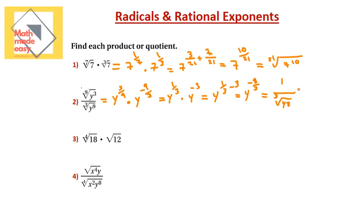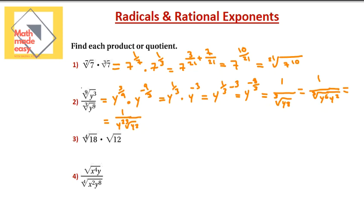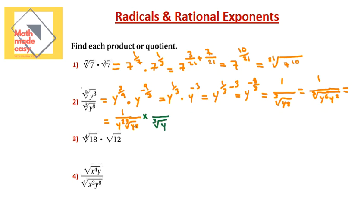With a negative exponent, writing it in radical form gives 1 over the cubic root of y to the power of 8. Now simplifying: the cubic root of y to the power of 8 — since 8 is more than 3, I break it into y to the power of 6 times y squared. y to the power of 6 can come out of the cubic root as y squared, leaving 1 over y squared times the cubic root of y squared. Now I need to rationalize because we can't have a radical in the denominator. I multiply by the cubic root of y (since y times y squared is y cubed), multiplying both numerator and denominator.